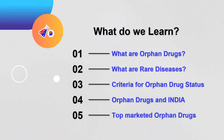In this session we are going to learn what orphan drugs are and what rare diseases are, followed by the criteria for declaring a drug's orphan status. Finally, we will see what the orphan drug scenario looks like in India, followed by which are the top marketed orphan drugs globally.